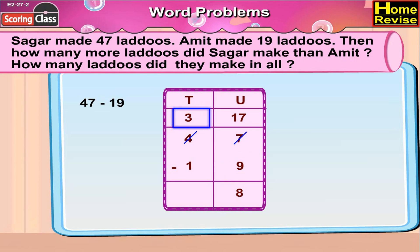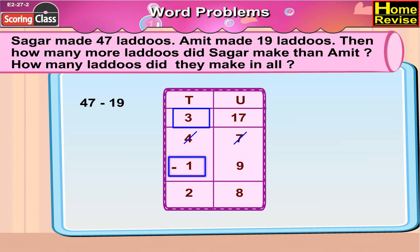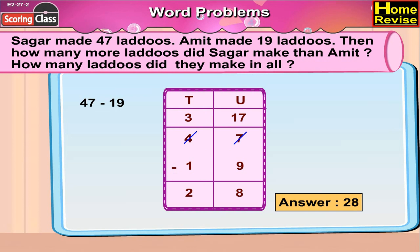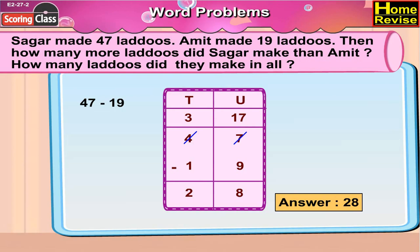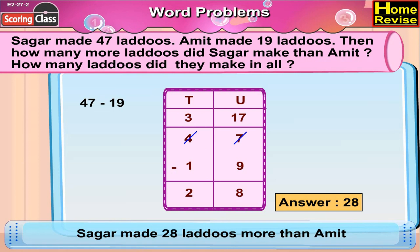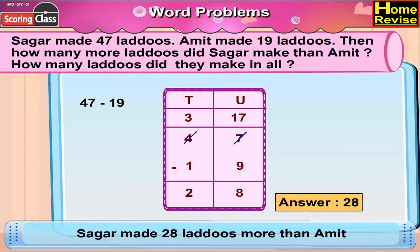Now 3 minus 1 is 2. So it is 28 laddus. Sagar made 28 laddus more than Amit.